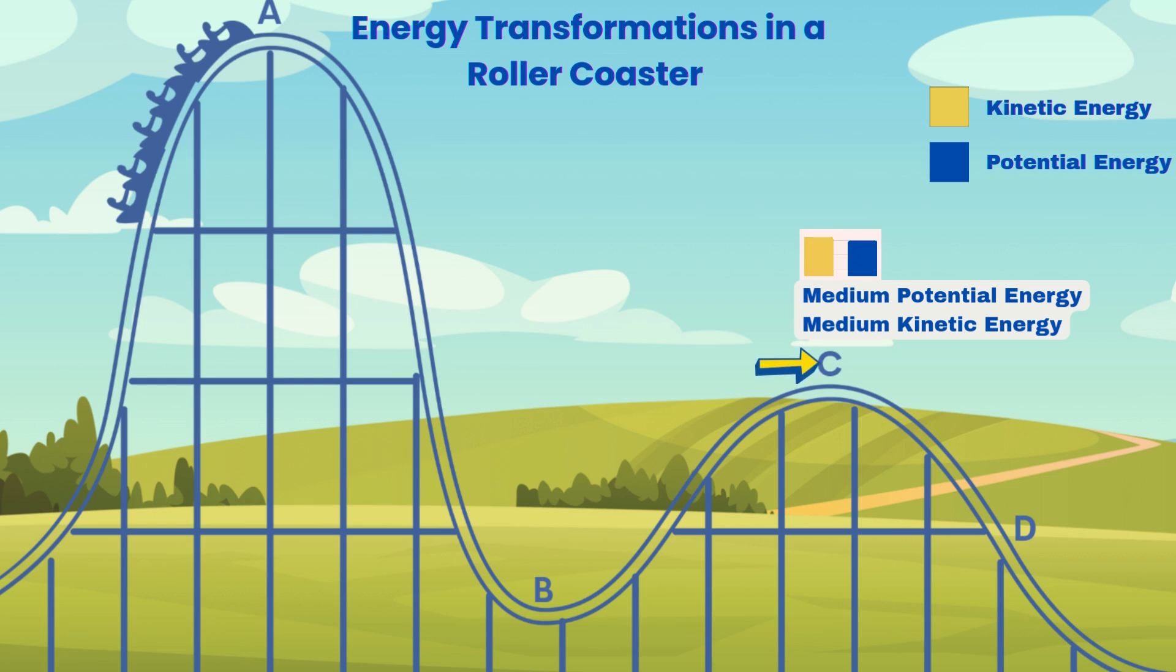At point C, the cart climbs another hill, but it is lower than point A. The cart regains some potential energy while losing some kinetic energy. Its speed slows down compared to point B, but it's still moving.